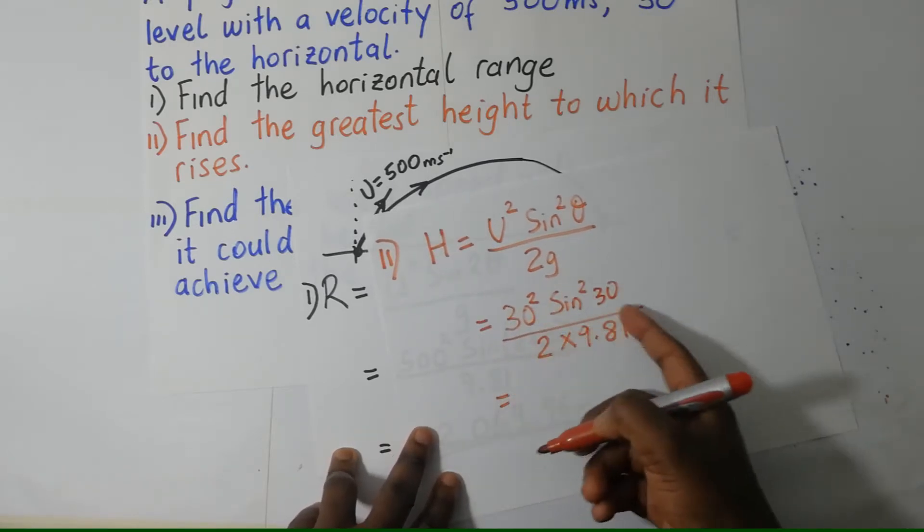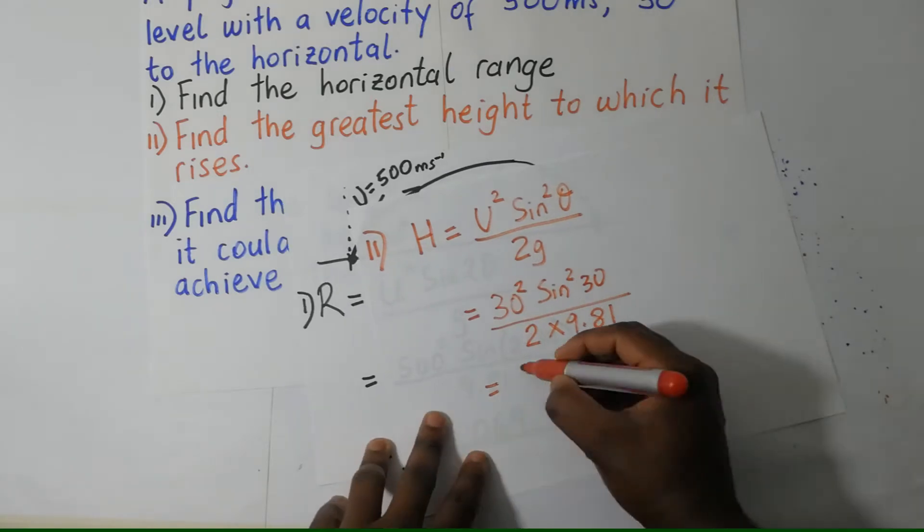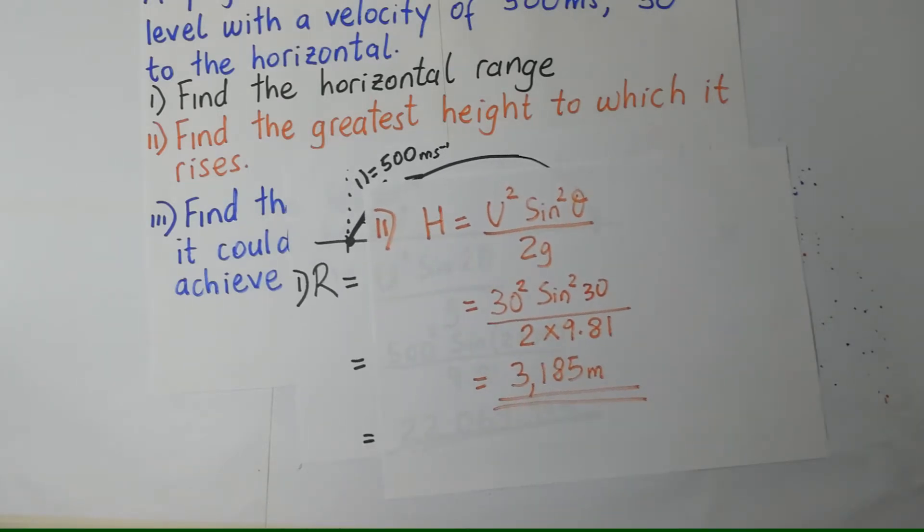And this is going to become, and that is our Roman 2. The greatest height reached is 3,185 meters.